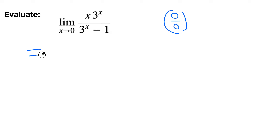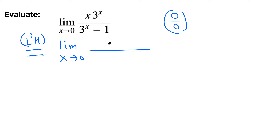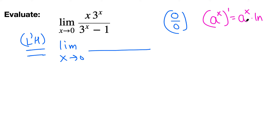I'm writing L'H just to point out I'm applying this rule. What we have to do is find the derivative of the top on the top and derivative of the bottom on the bottom. For something like a number raised to x — an exponential function — we know its derivative is itself times the natural log of the base, which is a. On the top we have a product, so we need to use the product rule.